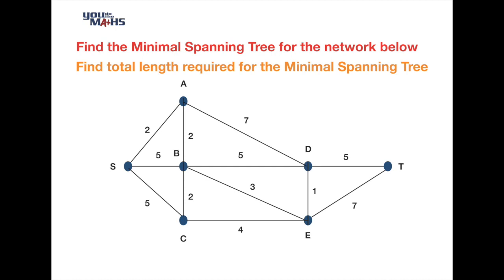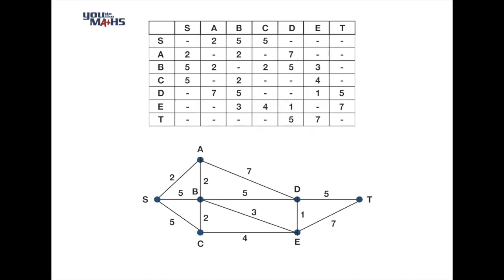To find the minimal spanning tree there are two basic approaches. One approach works through the network very methodically, and we can also use a process called Prim's algorithm, which requires us to make a table representing the network. Here we can see a table that represents each vertex and how far it is to any other connected vertex.